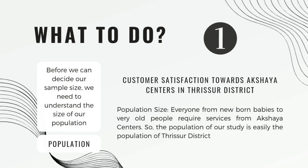Before we can decide on our sample size, we have to understand the population size. For example, if the synopsis topic is customer satisfaction towards Akshaya centers in the Thrissur district, then anyone availing Akshaya services in Thrissur is our sample population. Though Akshaya centers offer services from newborn babies to deceased people, practically the relevant age group is maybe 15 to 80 or 85 — whoever is alive in that district. All people belonging to that age group in Thrissur district constitute our population.